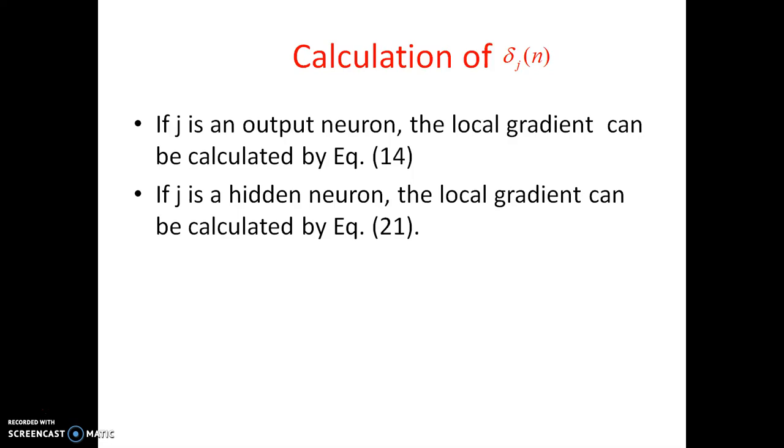So this is the entire explanation of backpropagation if the jth neuron is as a hidden layer. And we have already discussed if the jth neuron is as an output layer. So two cases were successfully computed.